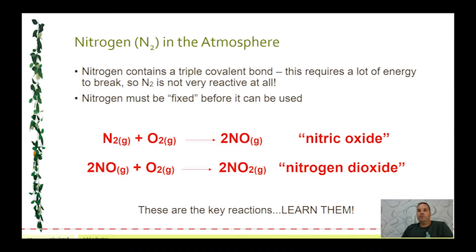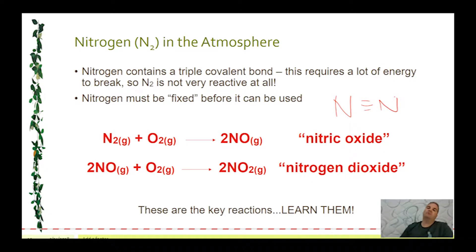Before we look at photochemical smog, you need to understand a little bit of the nitrogen cycle. Nitrogen is a very stable molecule. If you draw it out, it's a nitrogen atom with a triple covalent bond to another nitrogen atom. That triple bond makes it very stable, so it doesn't react. It requires a lot of energy to break that triple bond so you can use the nitrogen to form other molecules. To actually use it, we have to do something called nitrogen fixation.